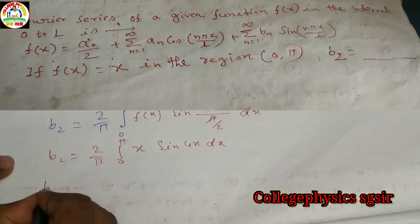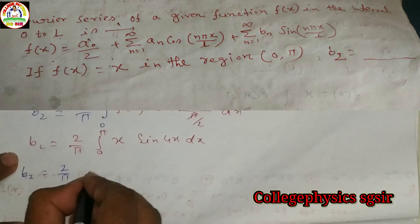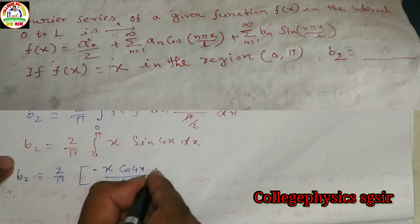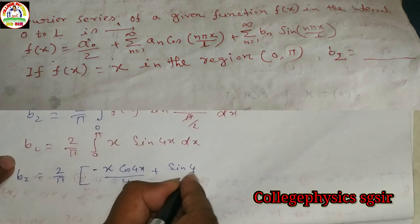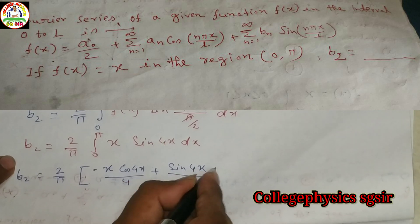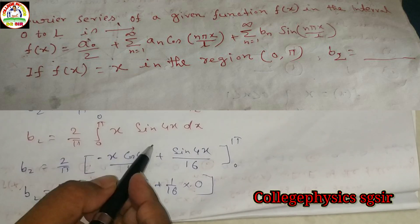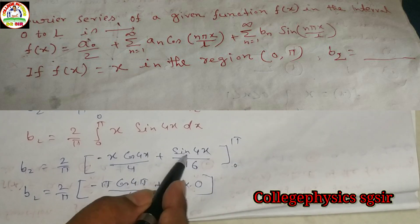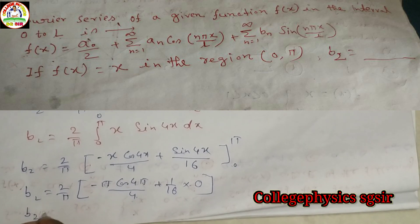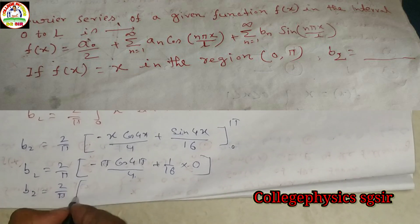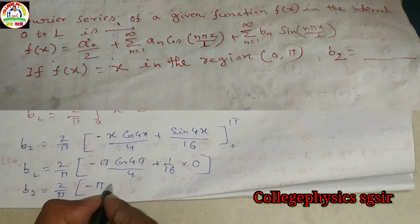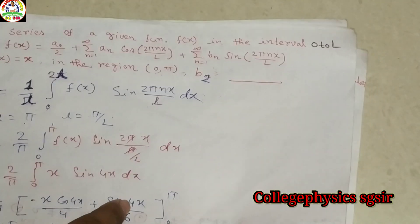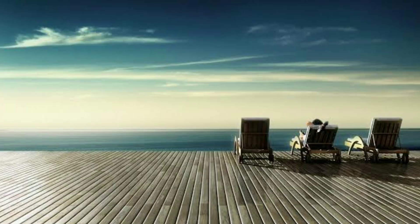Integrating by parts: b₂ = (2/π) [ x·(−cos(4x)/4) − ∫(−cos(4x)/4) dx ] from 0 to π = (2/π) [ −x·cos(4x)/4 + sin(4x)/16 ] from 0 to π. Substituting: cos(4π) = 1, sin(4π) = 0. We get b₂ = (2/π)(−π/4) = −1/2. So b₂ = −1/2.